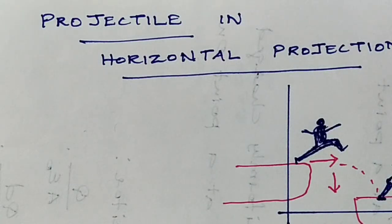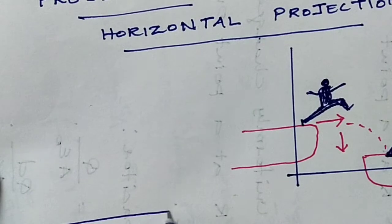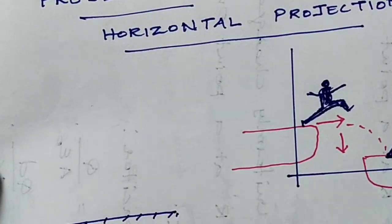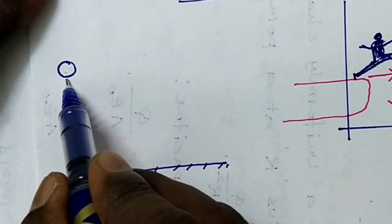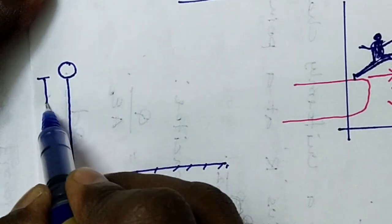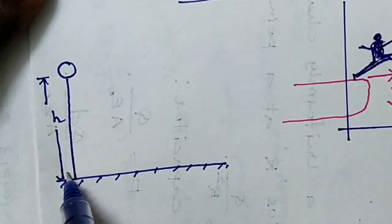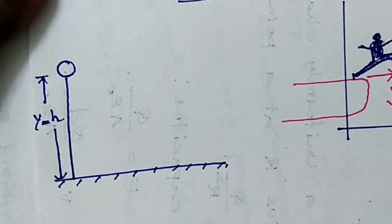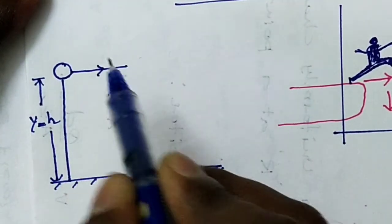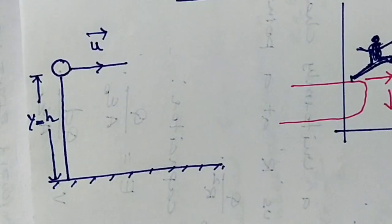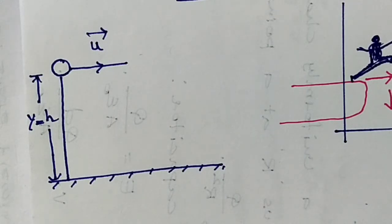Consider a projectile — a ball thrown horizontally with initial velocity u from the top of a tower of height h. The ground surface is below at height h in the y-direction. The ball moves in a horizontal direction with initial velocity u, and after that moves vertically downward due to constant acceleration from gravity.